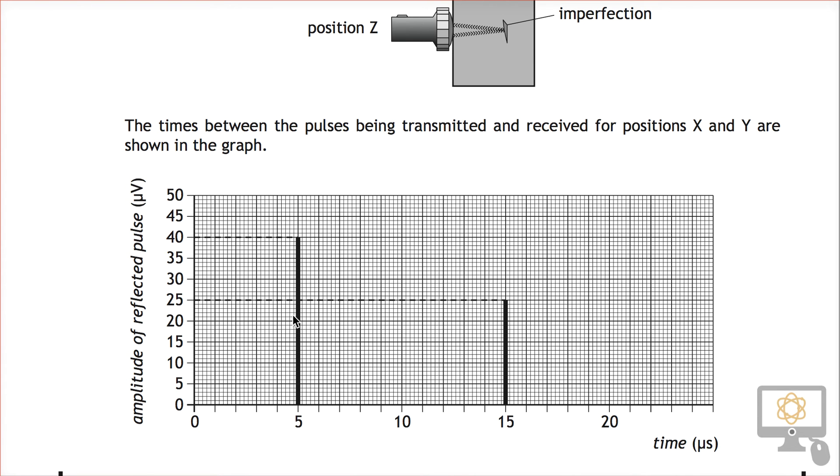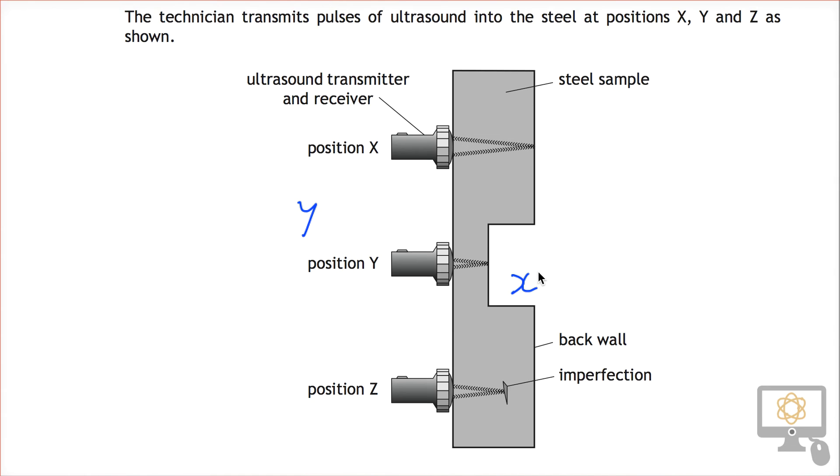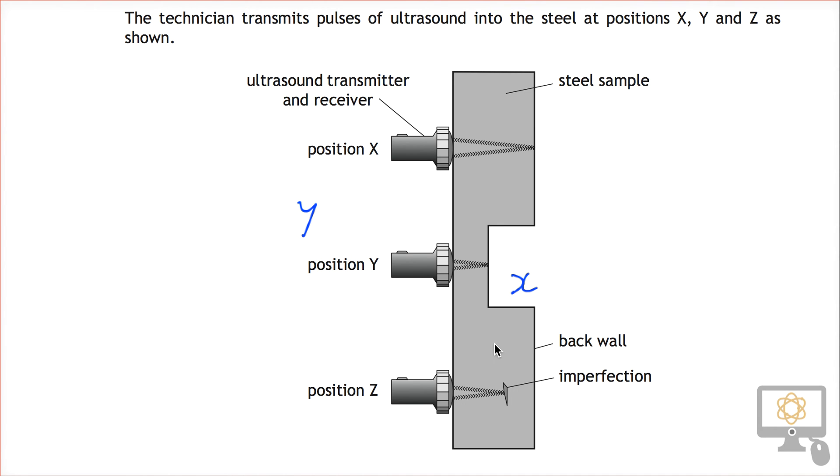And position y would have been this one over here. So let's just annotate those - this is y and this is x. And so if we then have a look at position z, well position z in terms of distance through the material is somewhere in between x and y, so it's going to take a time somewhere in between the time from x and y.